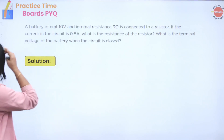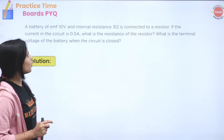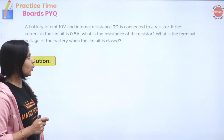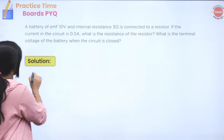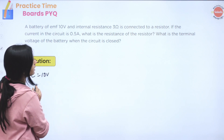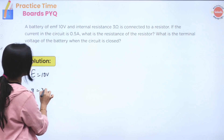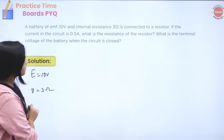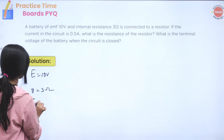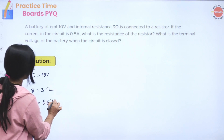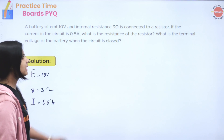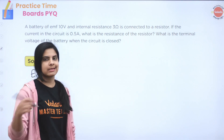Next question: a battery of EMF 10 volt and internal resistance 3 ohm is connected to a resistor. If the current in the circuit is I = 0.5 ampere, what is the resistance of the resistor and what is the terminal voltage of the battery when the circuit is closed?